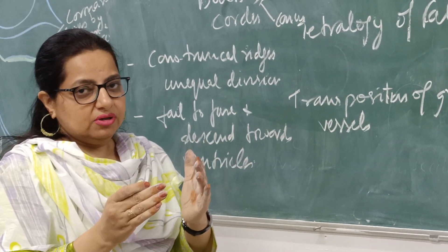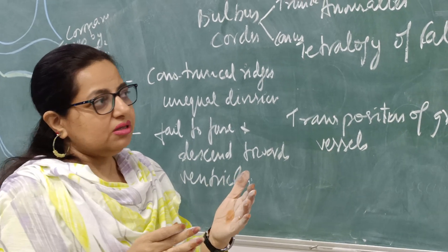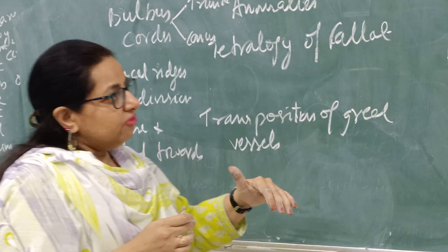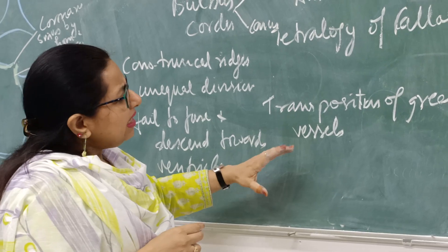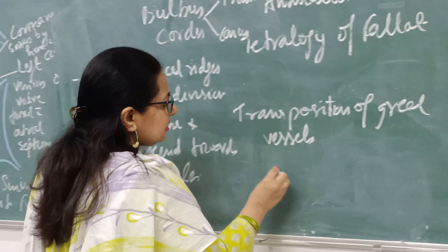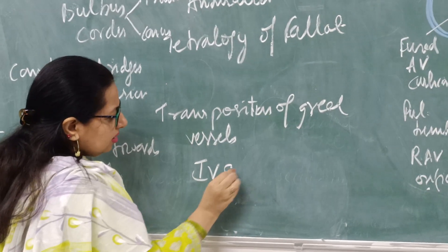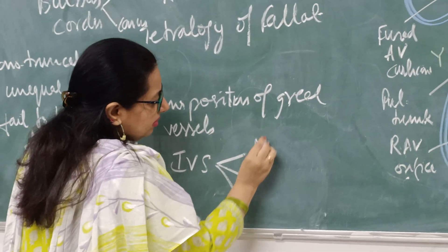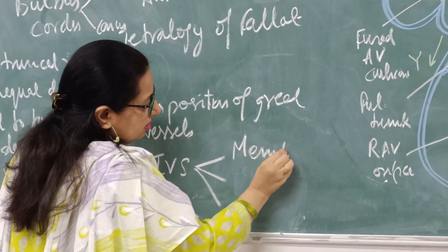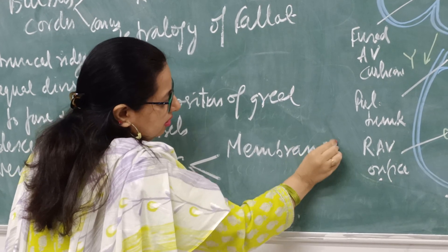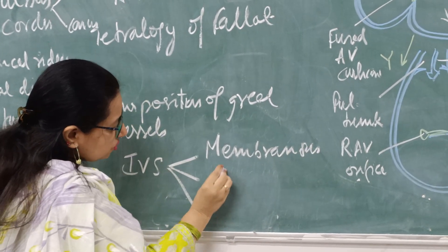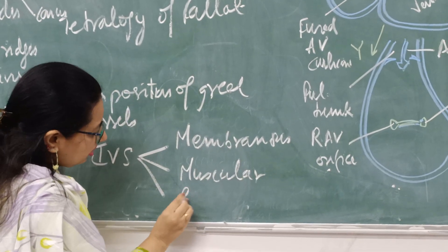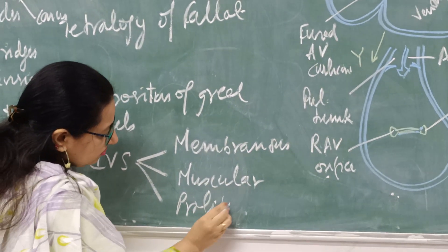The right and left bulbar ridges come together in the midline, fuse with each other, and grow downwards forming the bulbar septum. Now the interventricular septum is basically comprised of three parts: membranous, muscular, and proliferation from the AV cushions.